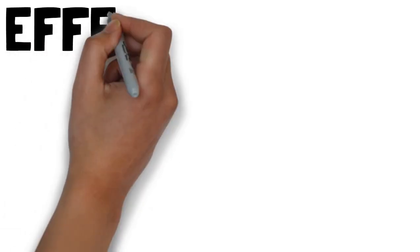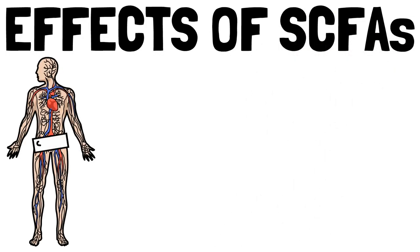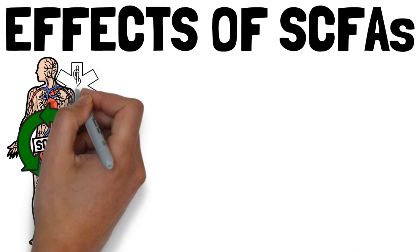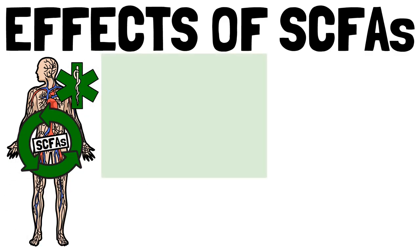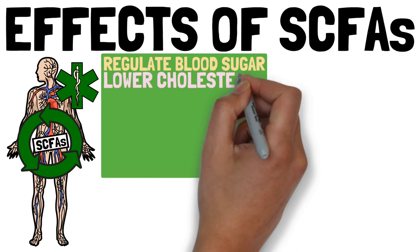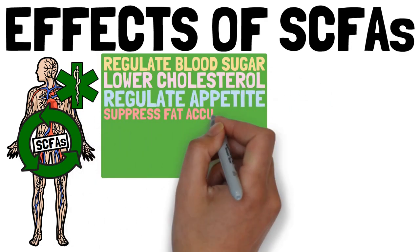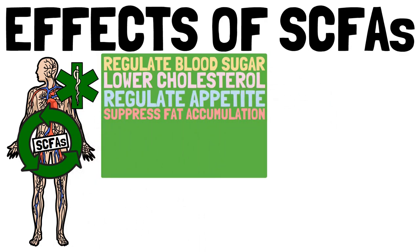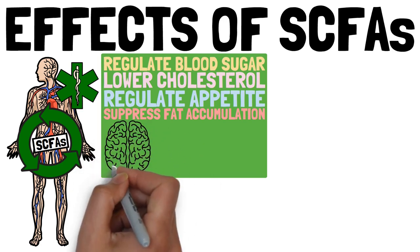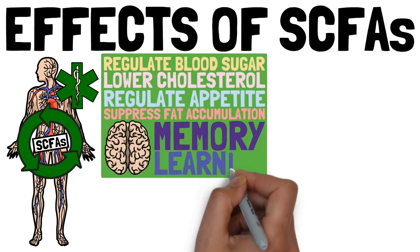The short-chain fatty acids circulating through our body promote good health wherever they go. They help with blood sugar regulation, lower cholesterol, regulate appetite, and even suppress fat accumulation in fat cells. Short-chain fatty acids also affect our brain, helping with memory and learning.